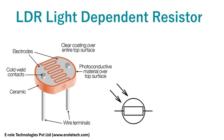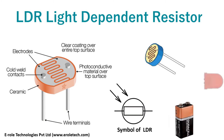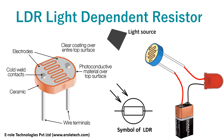Now let's suppose we have an LDR, a battery and a LED. We will connect the battery with the LED through the LDR. The LED will not glow unless the light falls on the LDR. The LED will turn off in the absence of light.